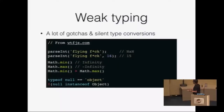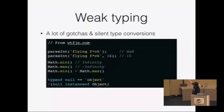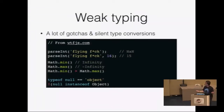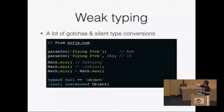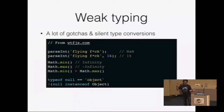Let's take a look at weak typing in JavaScript. If you try to parse an integer from a certain string, you get NaN, but if you try to parse it using hexadecimal radix, you get 15 — totally expected. If you take math.min, it's the minimum number expressible in JavaScript — it's infinity. But the maximum number is minus infinity. So the minimum number in JavaScript is actually greater than the maximum. Also, null is an object but it's not an instance of an object. JavaScript's weak type system can introduce subtle flaws to any program, and for crypto this can be disastrous.